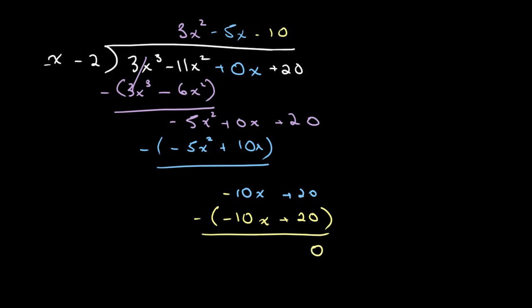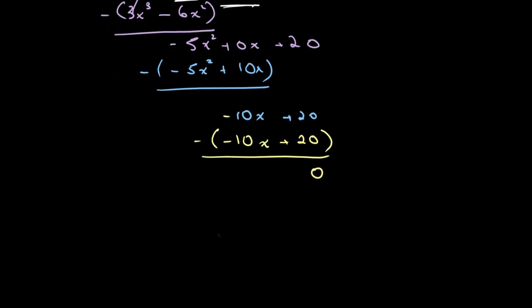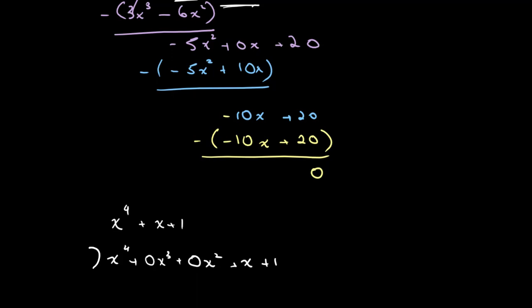As a reminder, if there is no coefficient for a term like x squared or x, it's important when writing out your long division to include plus 0x for that term. For example, if we had the equation x to the 4th plus x plus 1, we would have to write x to the 4th plus 0x cubed plus 0x squared plus x plus 1, and then proceed with long division as such.